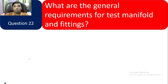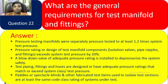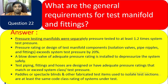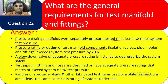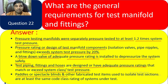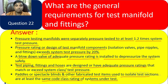Question 22: What are the general requirements for test manifolds and fittings? The manifold shall be separately pressure tested at least 1.2 times the test pressure. The design of test manifold components must exceed the system's test pressure by 20%. A blowdown valve of adequate pressure rating is installed to depressurize the system safely. Test piping, fittings, and hoses must have adequate pressure rating exceeding the system class test pressure. Paddles or spectacle blinds used to isolate the test section must meet the same code class rating as the system under test.